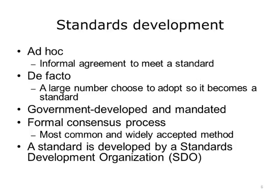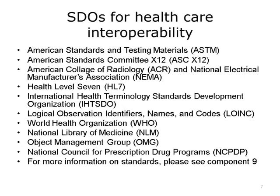Then there is the government-developed and mandated standard. For example, if you want to submit your tax information to the IRS, you need to use their standard form. However, the most common and widely accepted method of developing standards is via a formal voluntary consensus process. Organizations that develop standards are called Standards Development Organizations, or SDOs. Examples of SDOs for healthcare interoperability include ASC X-12, Health Level 7 or HL7, IHTSDO, LOINC, the National Library of Medicine, and NCPDP. This is not a comprehensive list.